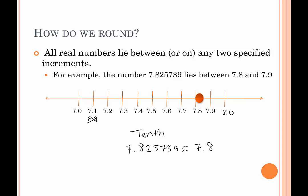In case you're wondering about the squiggles, this is called the approximately sign — it's like a tilde over a tilde. We don't use an equal sign because they are not 100% equal, so I use the approximately sign instead.